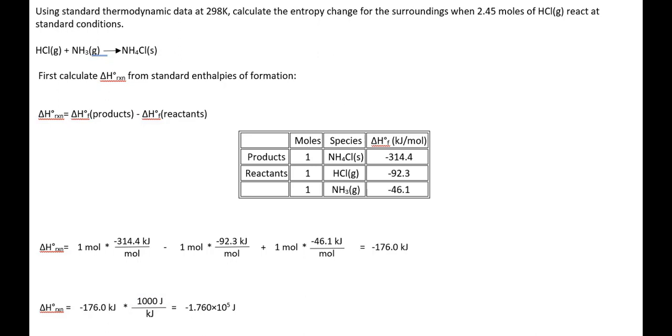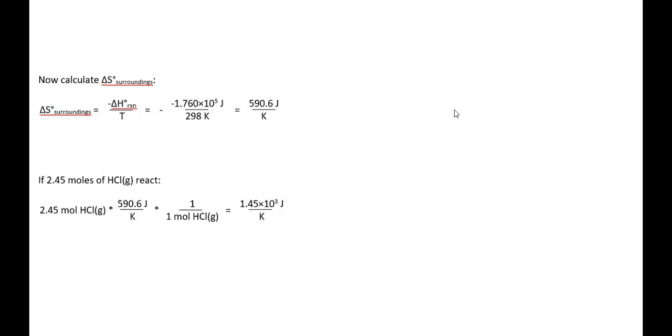Then we will proceed and calculate delta S surrounding. Substituting the value of delta H reaction in joules into the equation, we have a positive 590.6 joules per Kelvin.